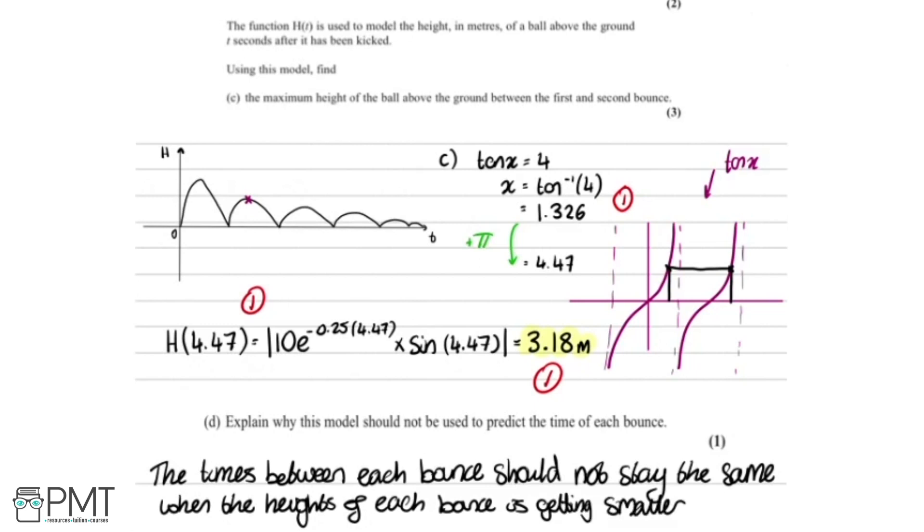And this makes sense because the times between each bounce are the same. I haven't drawn it very well here, so it doesn't really show it. However, in the model, the times between each one will be the same. However, in reality, it'll get shorter and shorter the more the ball bounces. So we just get one mark for this statement here.